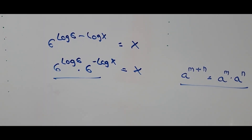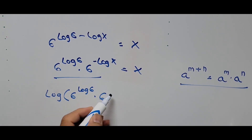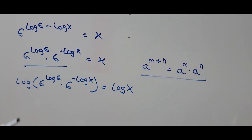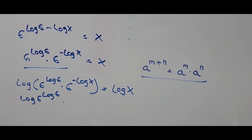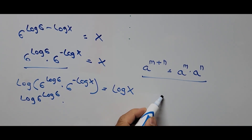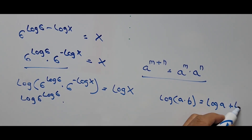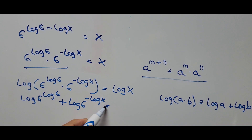Now we apply the common logarithm on both sides of the equation: log of (6^(log 6) times 6^(−log x)) equals log of x. Simplifying the left side, we apply the product rule for logarithms — log of a times b equals log of a plus log of b — giving us log of 6^(log 6) plus log of 6^(−log x) equals log of x.